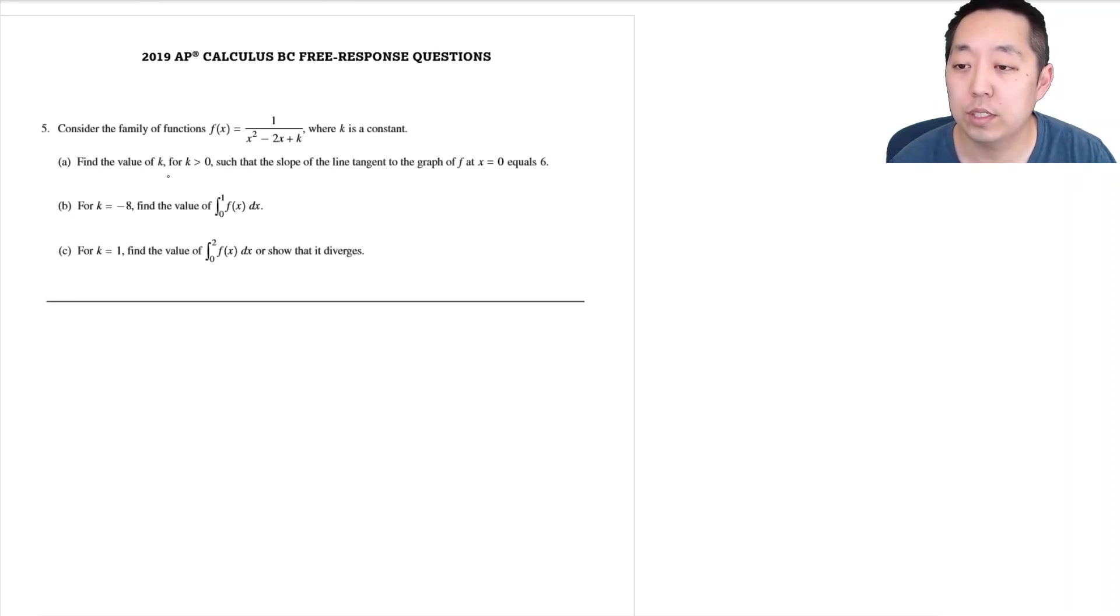Consider the family of functions f(x). Find the value of k, where k is greater than zero, such that the slope of the tangent line at the graph of f at x equals 0 equals 6.